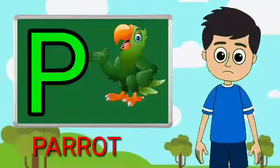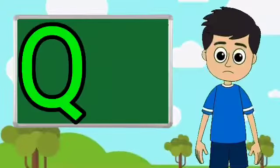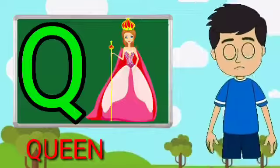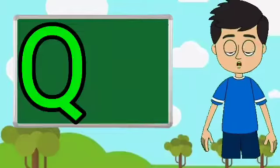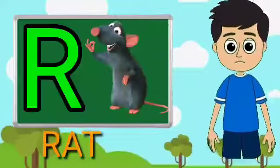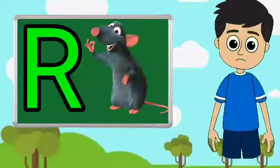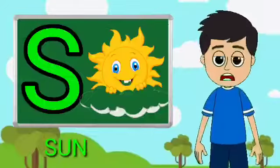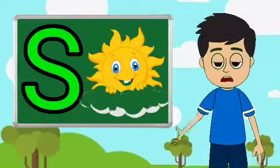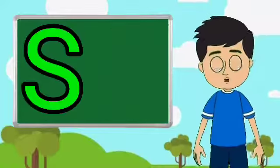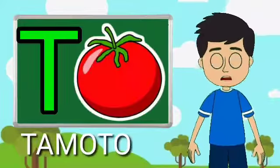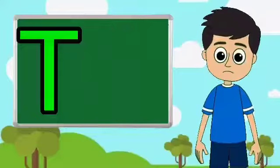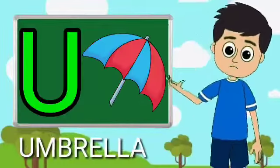O for orange, P for parrot, Q for queen, R for rat, S for sun, T for tomato, U for umbrella.